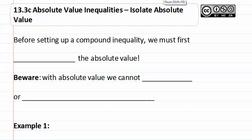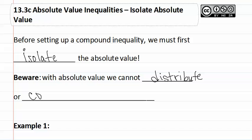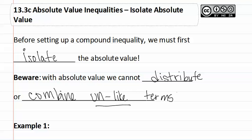13.3c Absolute Value Inequalities: Isolate Absolute Value. Before setting up a compound inequality, we must first isolate the absolute value. The thing to have caution about is that with absolute values, we cannot distribute or combine unlike terms. We will see examples of this below.